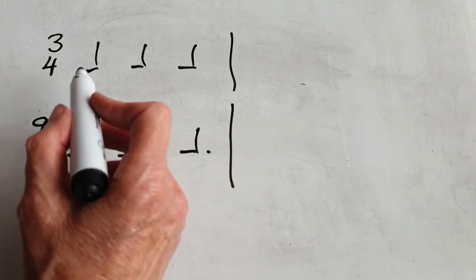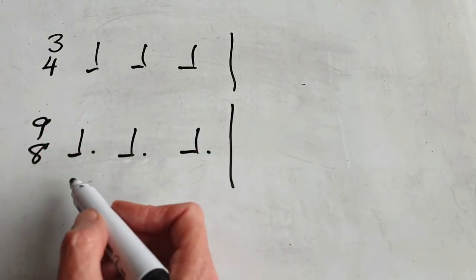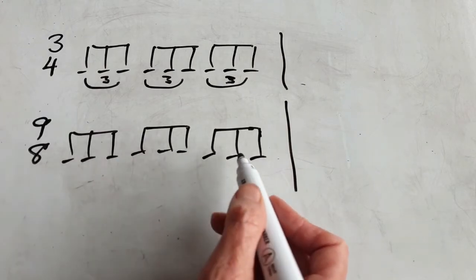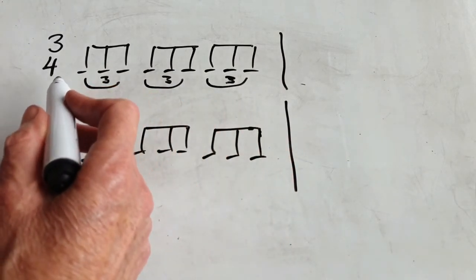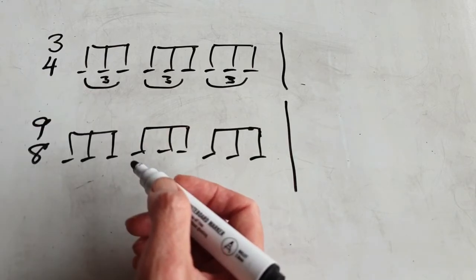The same goes for 3-4 and 9-8. Both have three beats in a bar. Still three beats in a bar, but you have to put the triplets if you're using 3-4 instead. If you didn't do the triplets, this is what would happen.